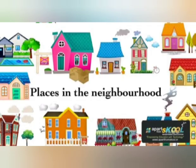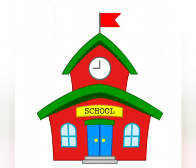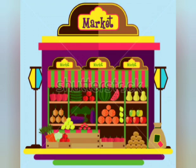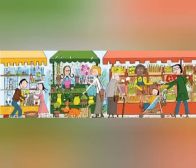These neighborhood places provide us many services. Like school — what do we get from the school, or which service are we provided with? We get knowledge from the school. Knowledge is the service and school is the neighborhood place from where we get this service. It is a neighborhood place where we learn to read, write and do other good things. Market is a neighborhood place where we go to purchase the things of our daily needs.